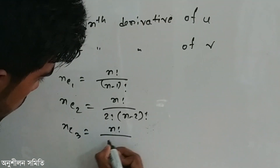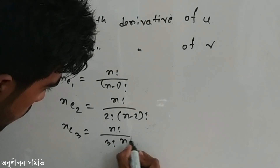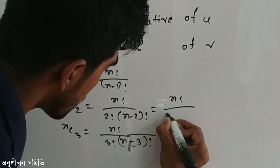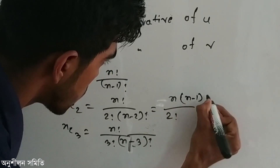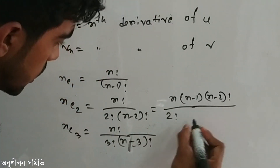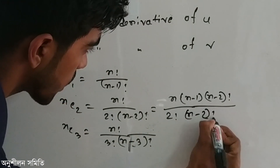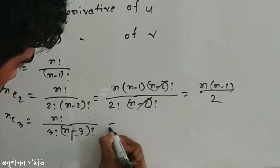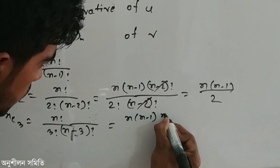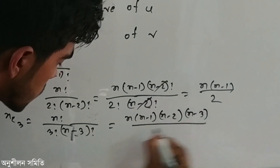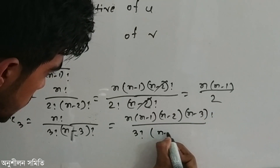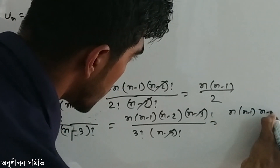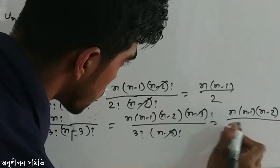nC3 equals n factorial divided by 3 factorial into (n minus 3) factorial. Simplifying: nC2 equals n into (n minus 1) divided by 2. nC3 equals n into (n minus 1) into (n minus 2) divided by 3 factorial, which is n into (n minus 1) into (n minus 2) divided by 6.